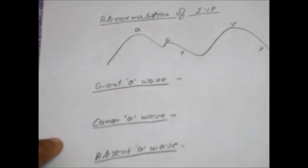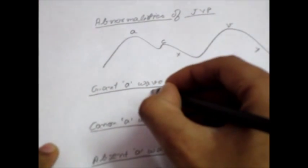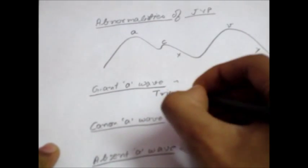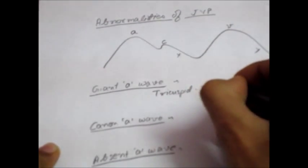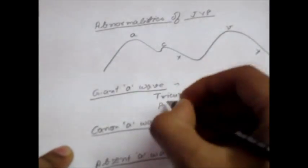Now what are those situations? For example, we can say tricuspid stenosis, and also pulmonary hypertension or pulmonary stenosis.